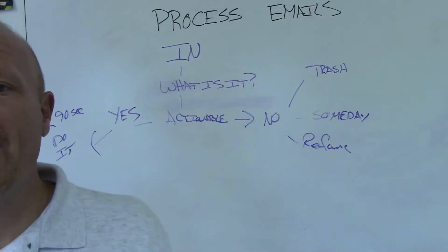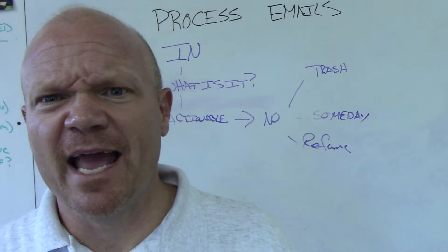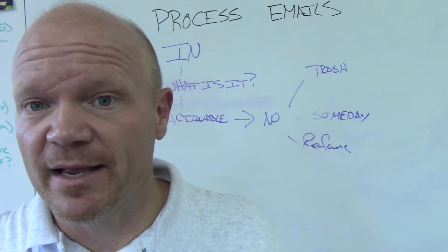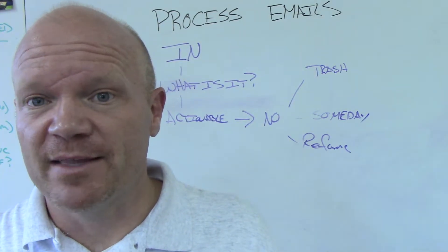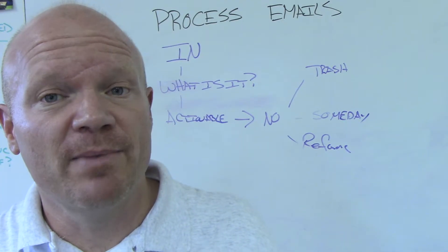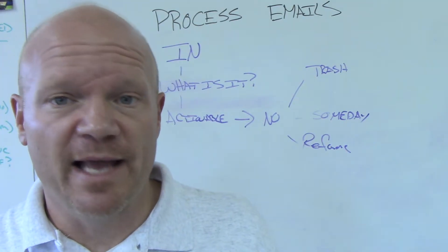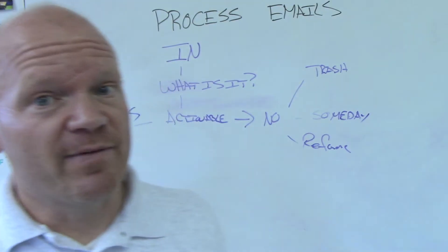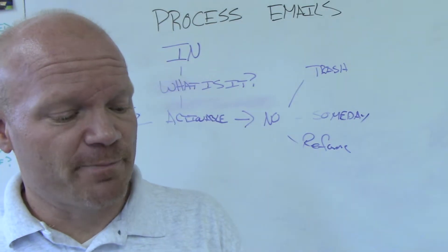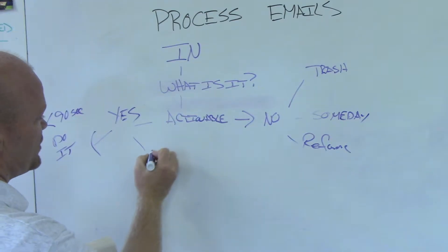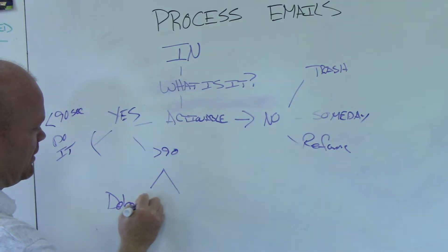Because remember, you've already calendared this time to be there working on your emails. Nothing else should be happening. You've set this 30 minutes or 45 minutes or maybe even an hour to address your emails. So if it's 90 seconds or less, knock it out. Now, if it's not 90 seconds or less, there's two options here. If it's greater than 90, we either need to delegate or defer it.